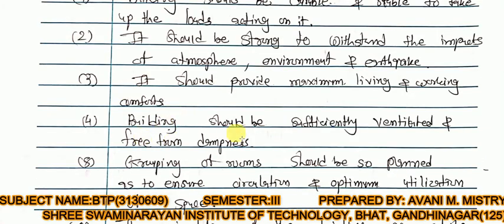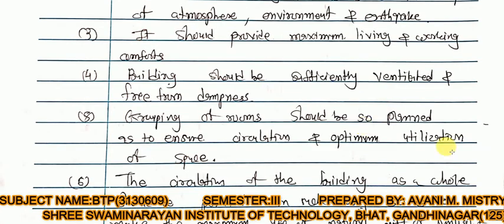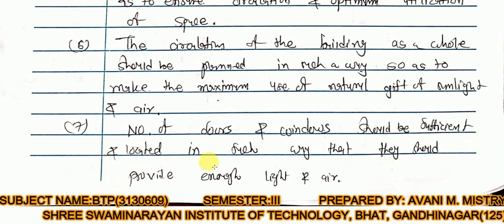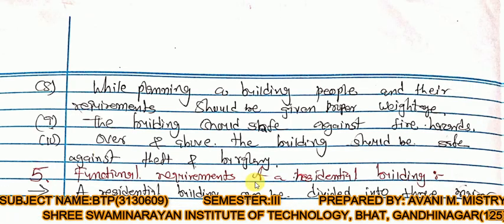The building should provide maximum living and working comforts. It should be sufficiently ventilated and free from dampness. Grouping of rooms should be planned to ensure circulation and optimum utilization of space. The circulation of the building as a whole should be planned to make maximum use of natural sunlight and air. The number of doors and windows should be sufficient and located to provide enough light and air.